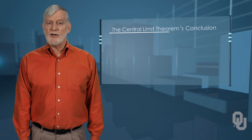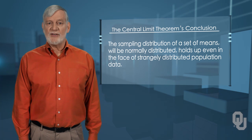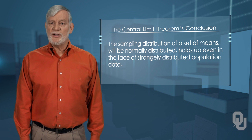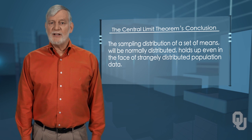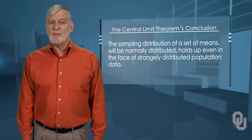The central limit theorem's conclusion that the sampling distribution of a set of means will be normally distributed holds up even in the face of strangely distributed population data.